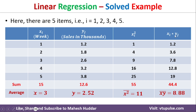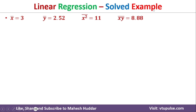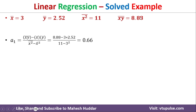Now we calculate x*y: 1×1.2=1.2, 2×1.8=3.6, and so on. The total sum of x*y is 44.4, and 44.4 divided by 5 gives the mean of x*y as 8.88. Substituting all these parameters into the a1 formula — x*y bar, x-bar, y-bar, x²-bar, and x-bar squared — we get a1 equal to 0.56.